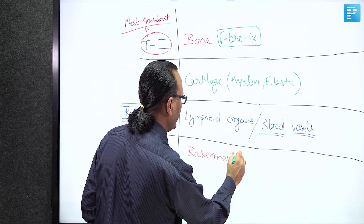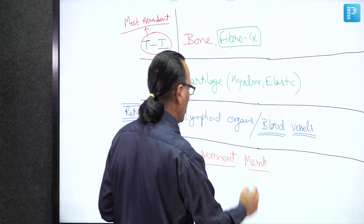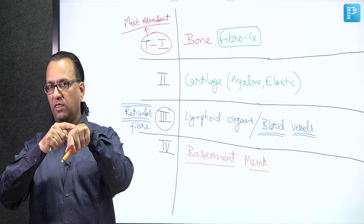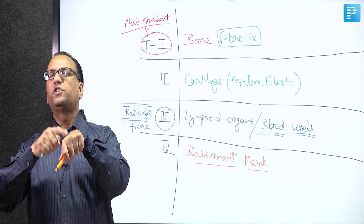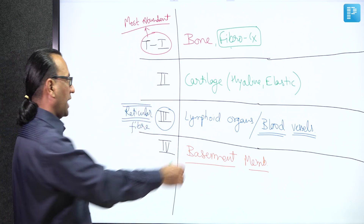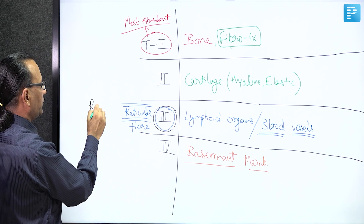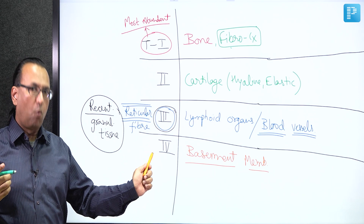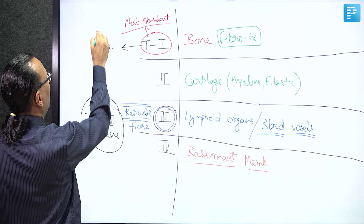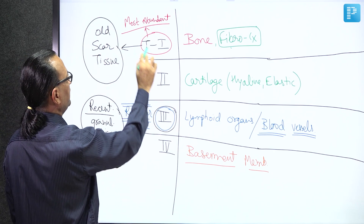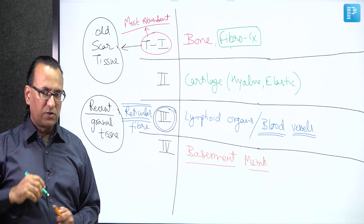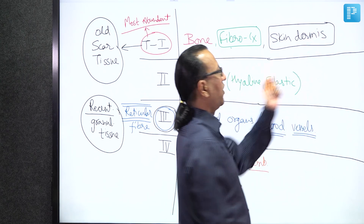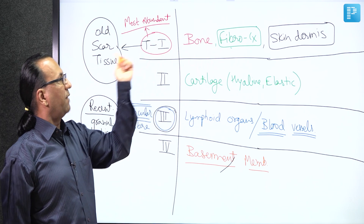In recent healing tissue or granulation tissue, type 3 collagen fibers are found. In old scar tissue, the answer changes to type 1 collagen. Type 1 collagen, the most abundant, is also found in the skin dermis - more than 80% of fibers in the skin dermis are type 1 collagen. These are the examples to remember for the various types of collagen fibers.